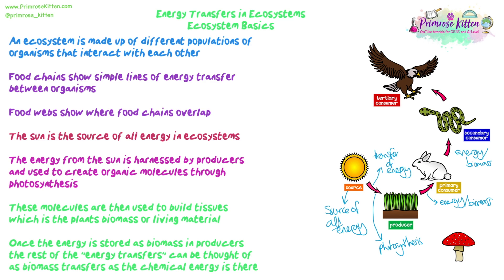Those molecules — and the energy harnessed to build them — become used to build tissue: new cells, new cell walls, new material that the plant creates as it grows. That living material, those tissues, are known as biomass. So biomass is essentially all of the living material of an organism. Once energy is stored from the sun by producers into their biomass, the rest of the energy transfer that occurs is actually a transfer of biomass.